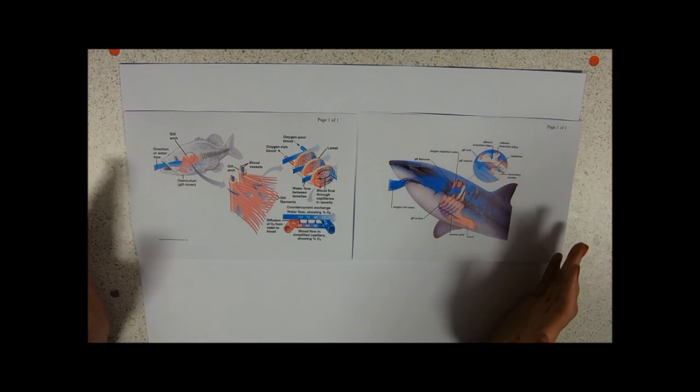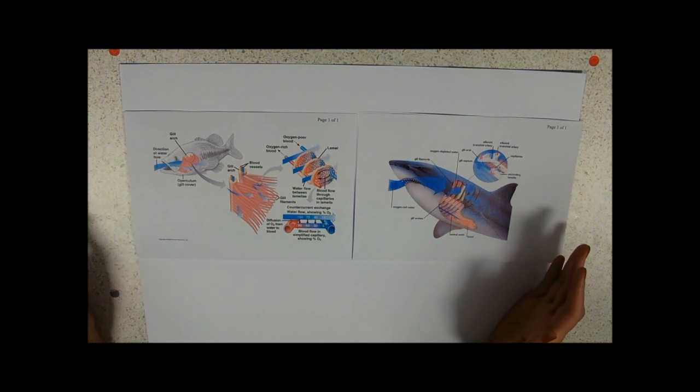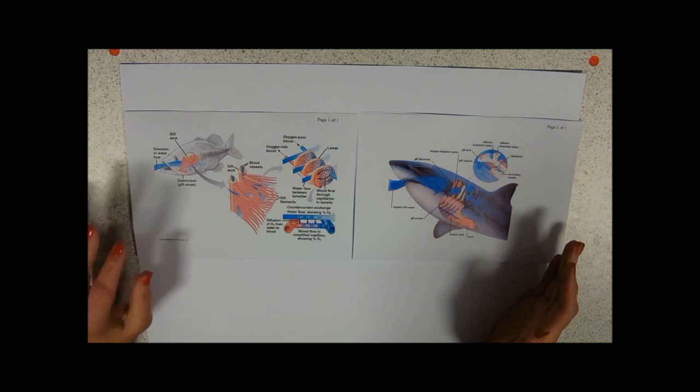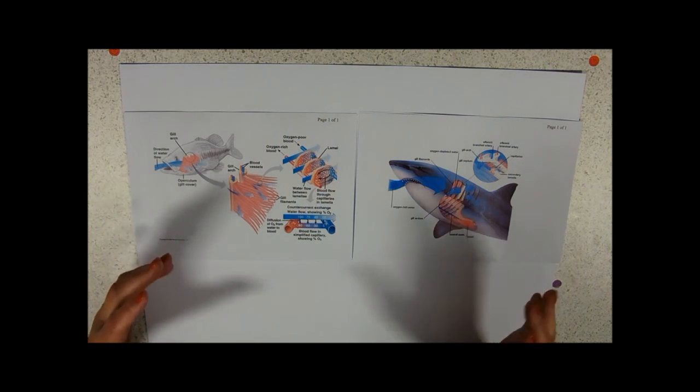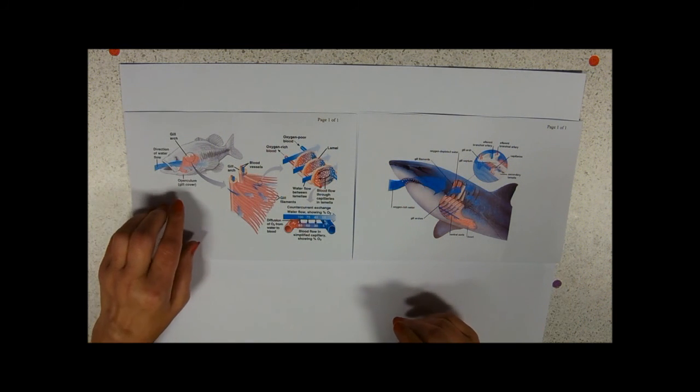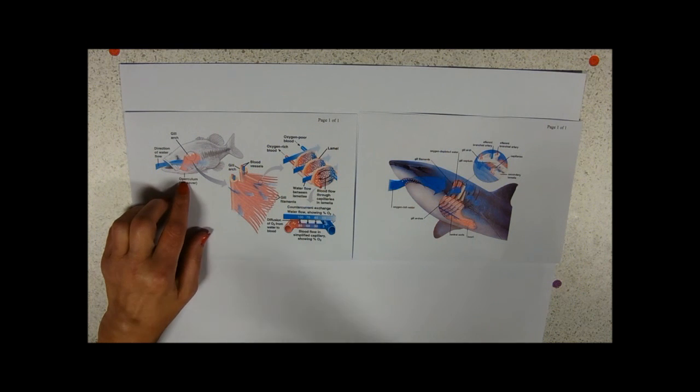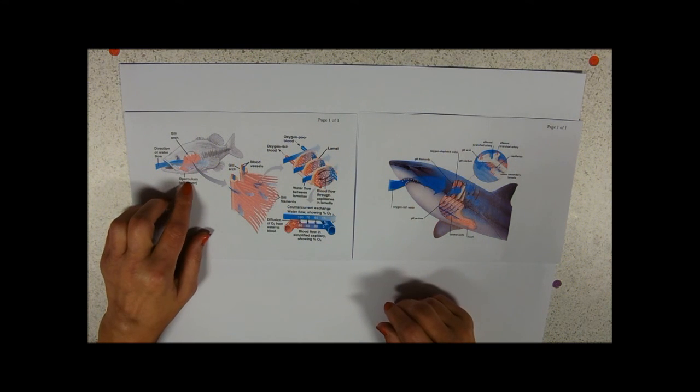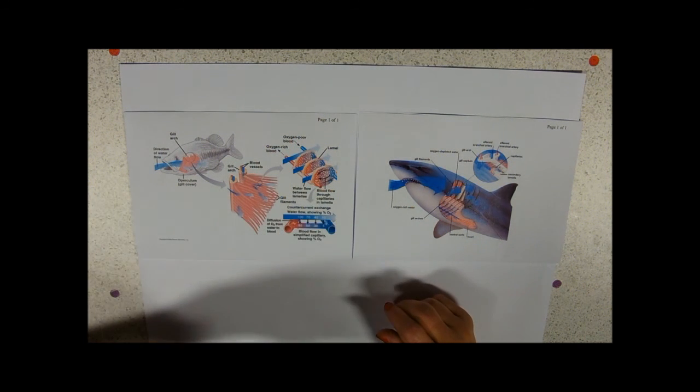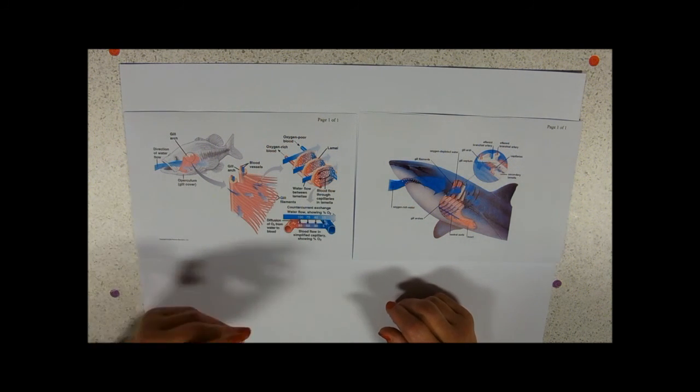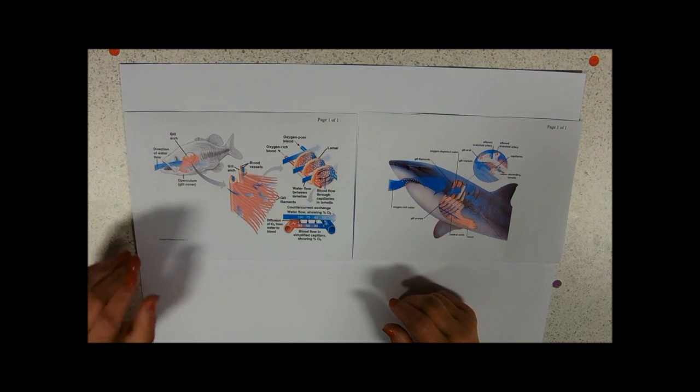But basically, in both of these organisms, the gas exchange surface are the gills. Now, you can see that in the bony fish, it's kind of behind that sort of cheek plate, which just looks like a cheek plate, and it's called an operculum. It covers over the gills. It's a moveable flap, so it moves in and out.